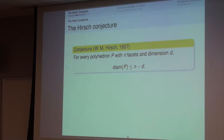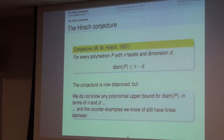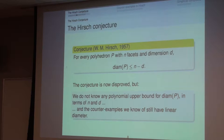We can now restate the Hirsch conjecture: for every polyhedron with n facets and dimension d, the diameter should not be greater than n minus d. The main point of this talk is showing counterexamples to this conjecture. These counterexamples violate it by a small amount — about 5%, or in the case of unbounded polyhedra by 25%, but still linear. We don't even know whether there's a polynomial upper bound for the diameter in terms of n and d. The gap between the worst polytope we can construct and the best upper bound we can prove is huge.